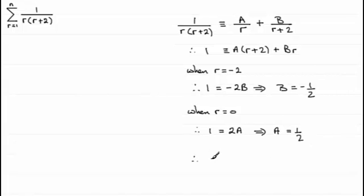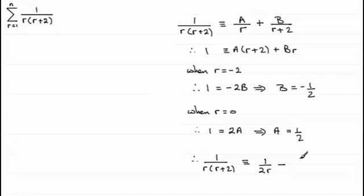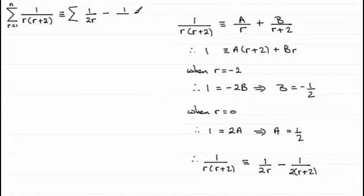So we can say that 1 over r(r+2) is identical to 1/(2r) minus 1/(2(r+2)). This means we're now summing [1/(2r) − 1/(2(r+2))] for r going from 1 to n.